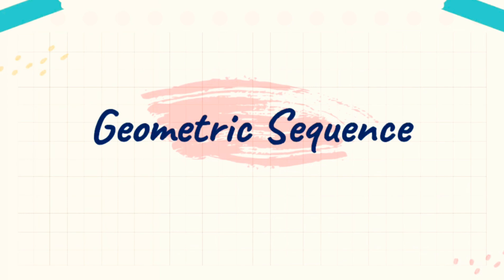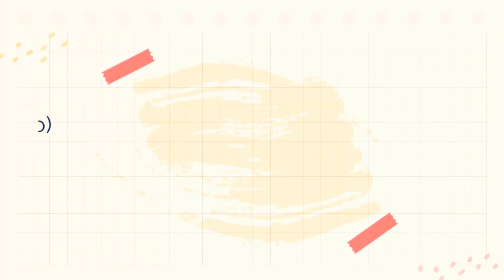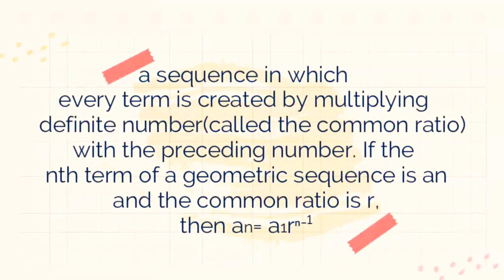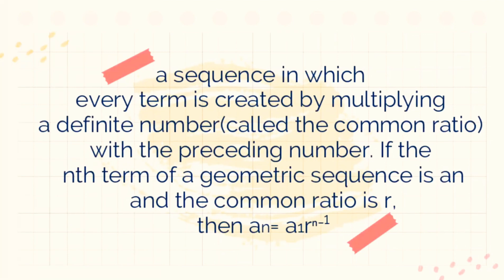Next is geometric sequence. A geometric sequence is a sequence in which every term is created by multiplying a definite number, called the common ratio, with the preceding number. If the nth term of a geometric sequence is a sub n, and the common ratio is r, then the formula is a sub n equals a sub 1 times the ratio raised to n minus 1.